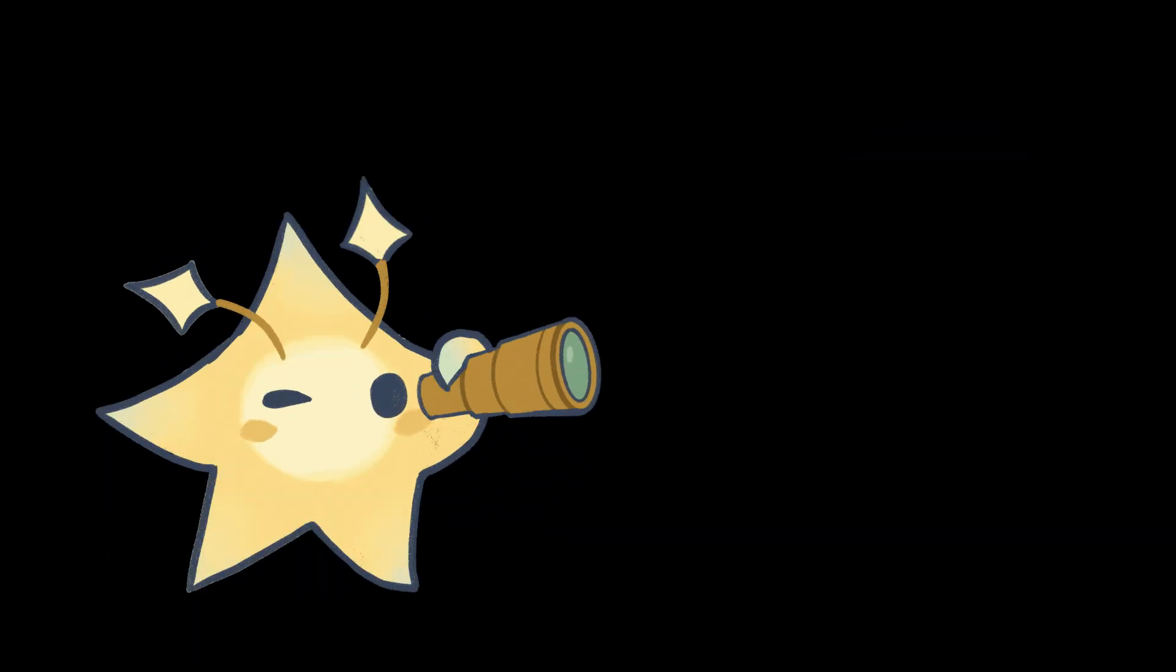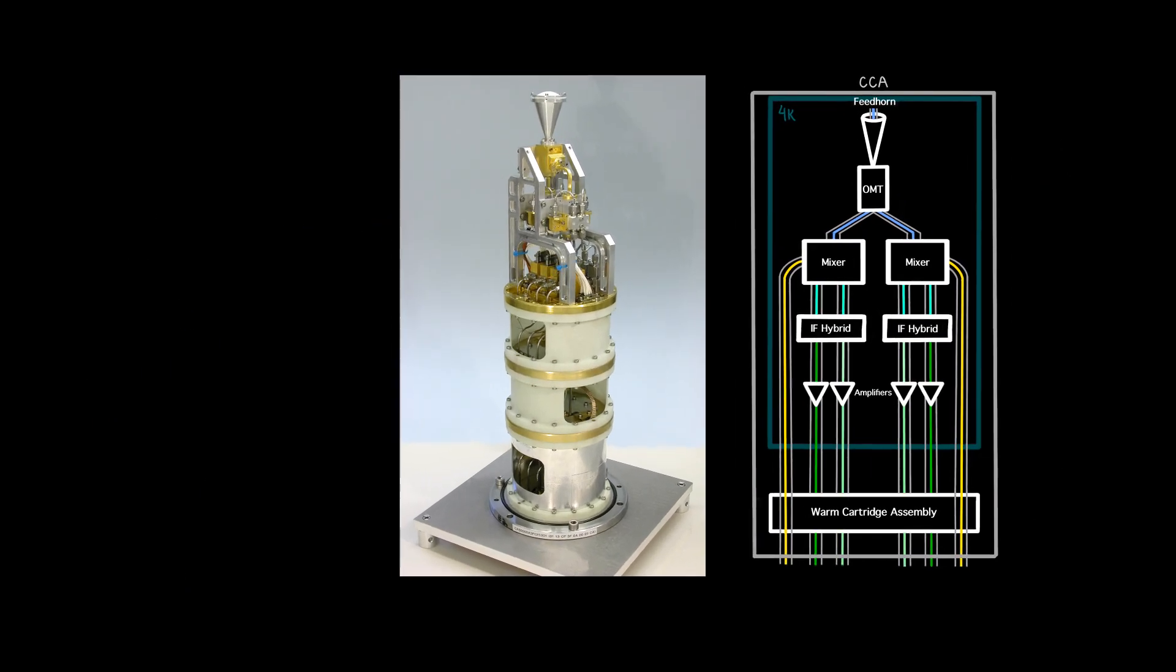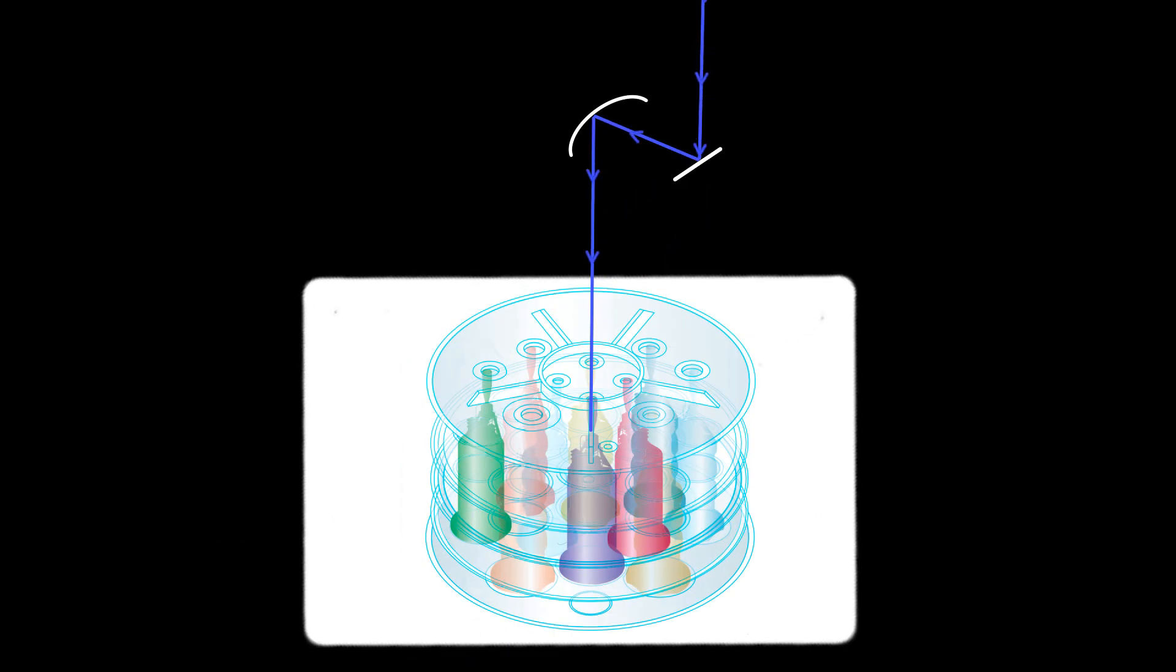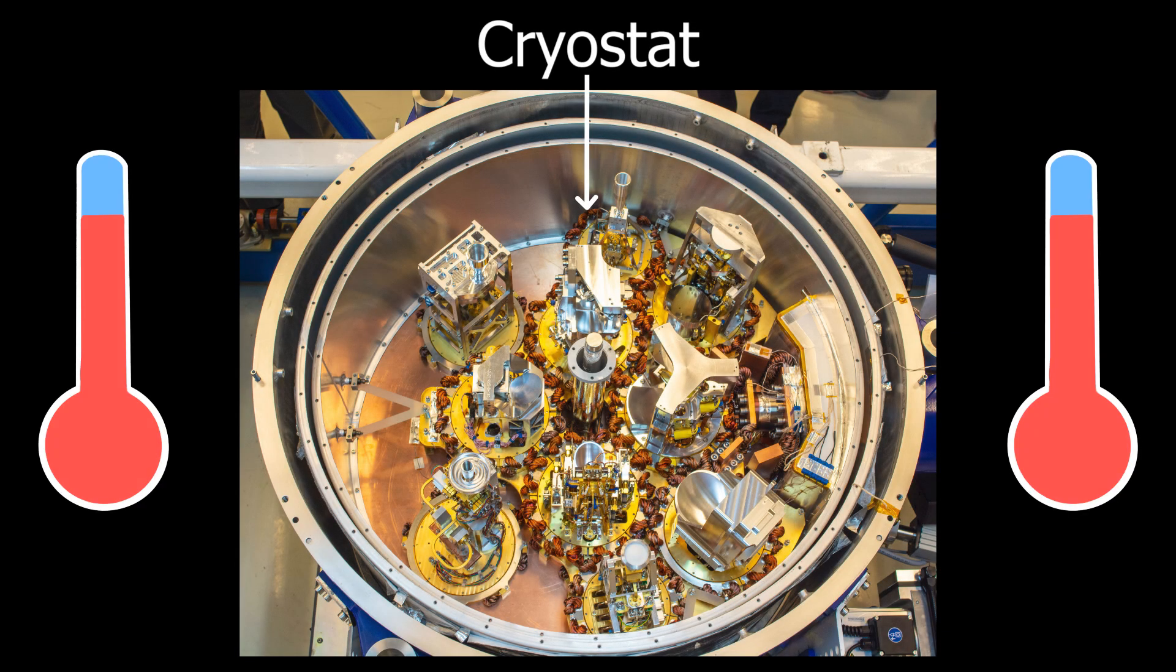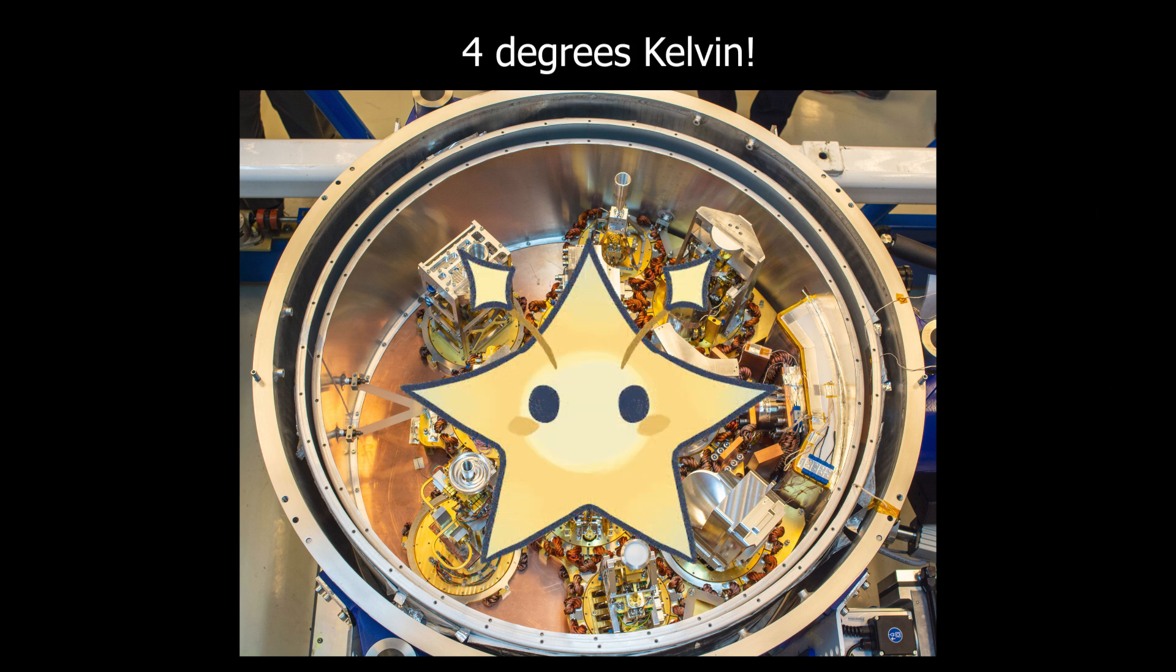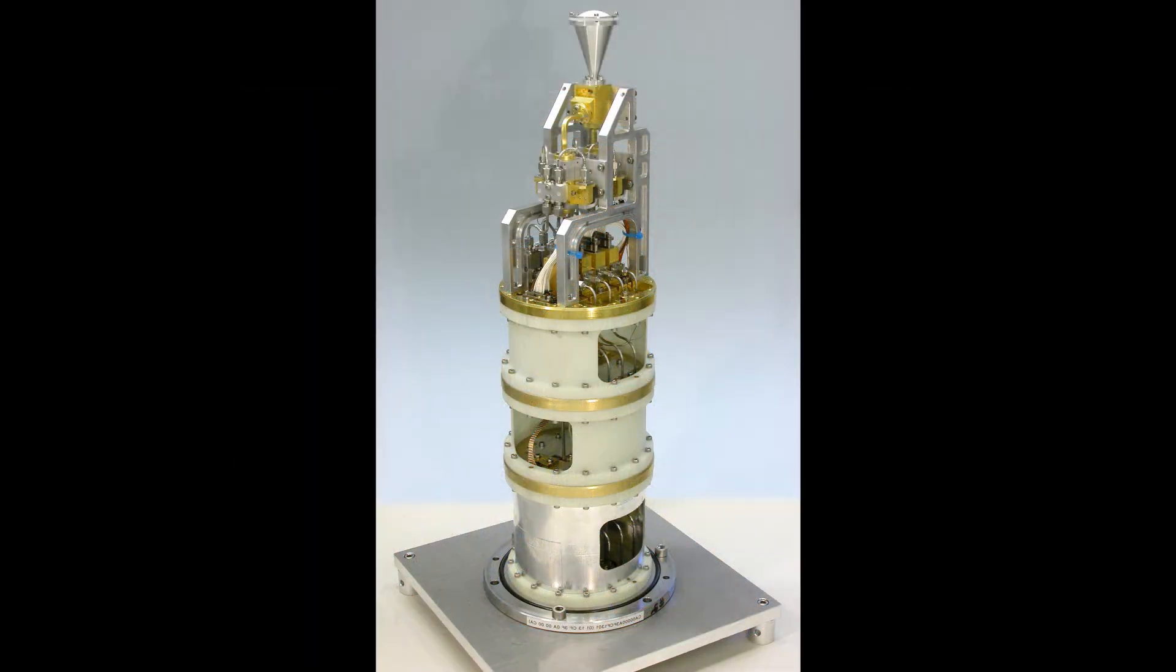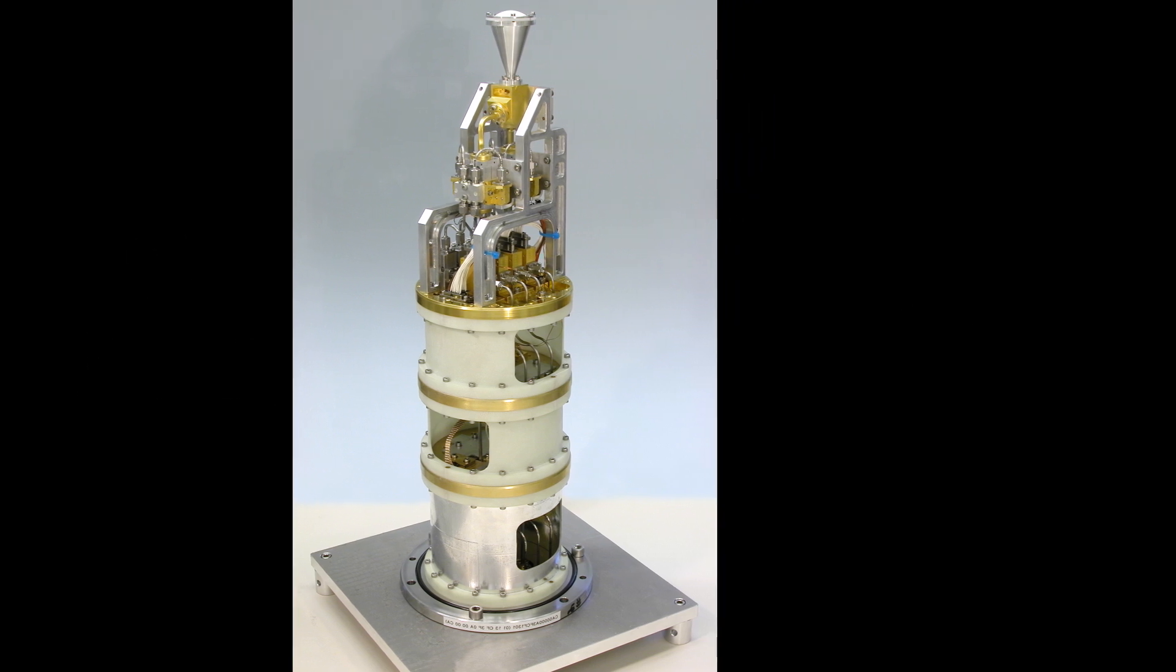To learn how the signal is down-converted, let's take a closer look at how a typical ALMA receiver works. As the signal passes through the telescope, external optics divert the signal through a window into a cryostat, which has temperature stages at increasingly cold temperatures. The coldest stage is at 4 degrees Kelvin. Inside the cryostat is the cold cartridge assembly, or CCA, containing the first part of the receiver including the mixer.